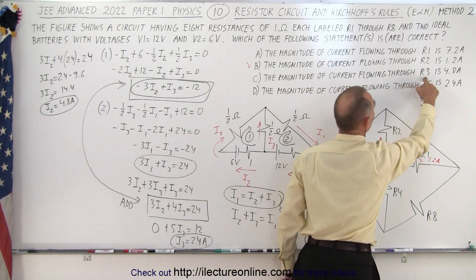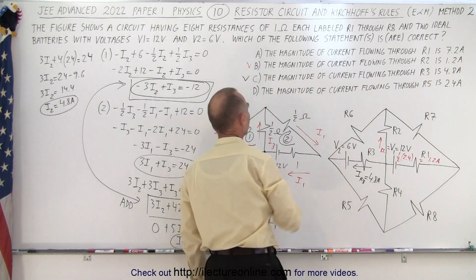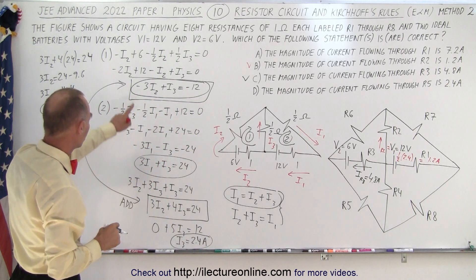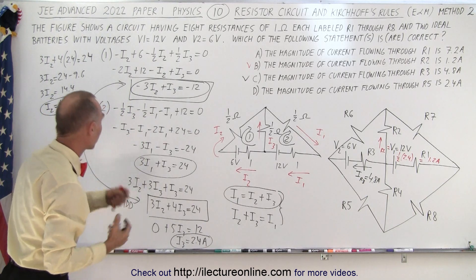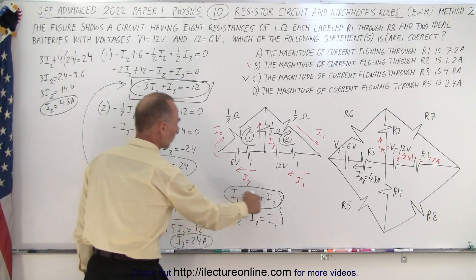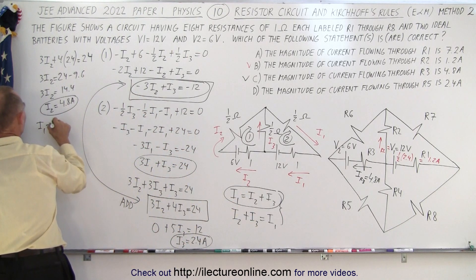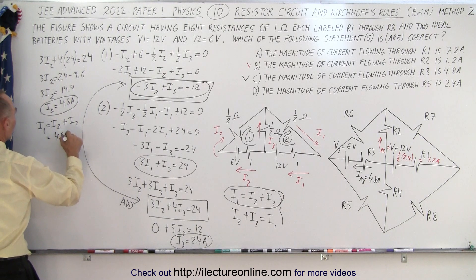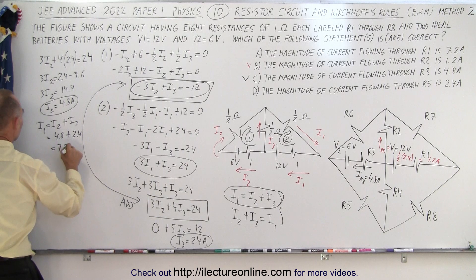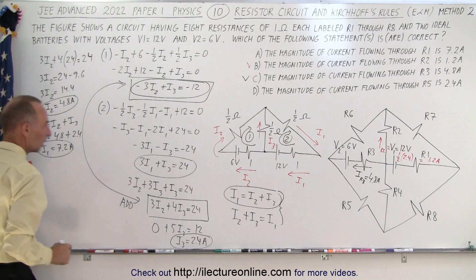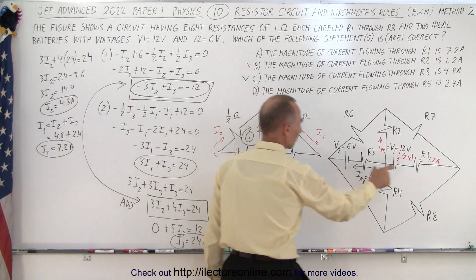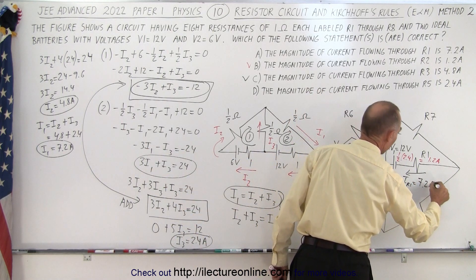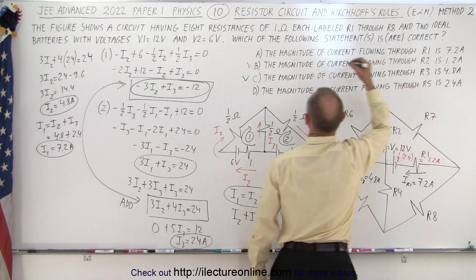Now I1 = I2 + I3 = 4.8 + 2.4 = 7.2 amps. I1 is this current in the folded circuit, which corresponds directly to the current through R1 in the original circuit. The current through R1 is 7.2 amps — that's correct as well.